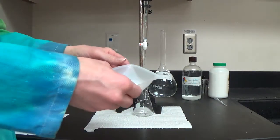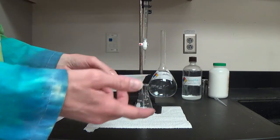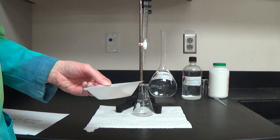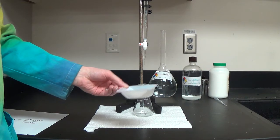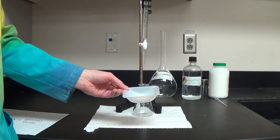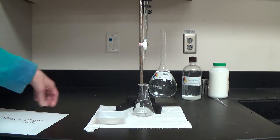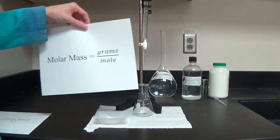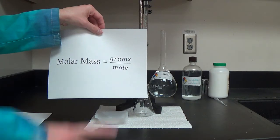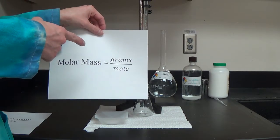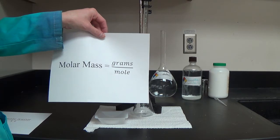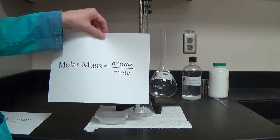We put it in one of these super fancy weigh boats and put it on a balance, being sure we zero out the weigh boat ahead of time. I have my already measured grams of my unknown acid here. So why are we doing the titration? We're doing the titration to determine the moles part. We've got the grams part — it's that moles part we're going to determine with our titration.